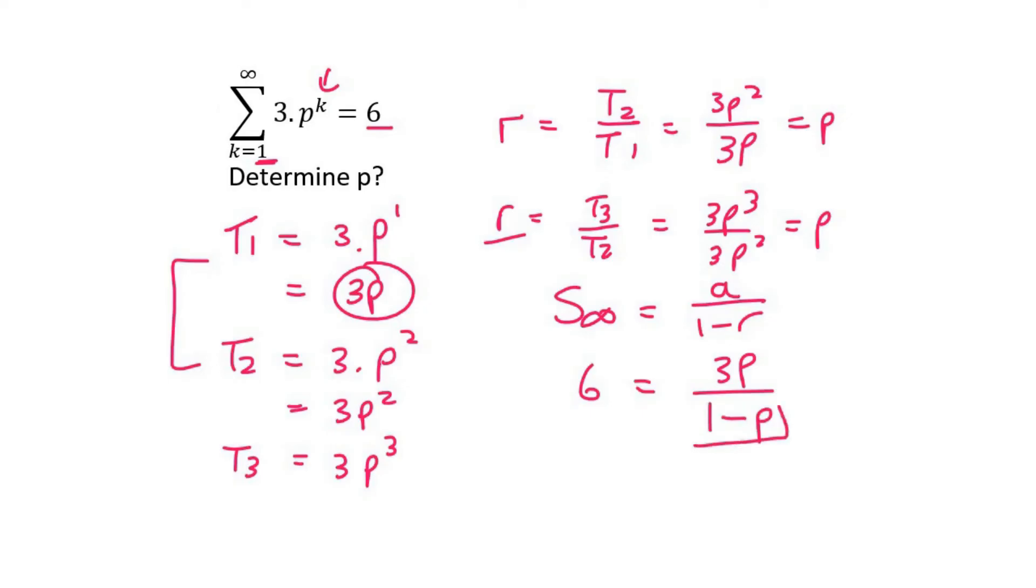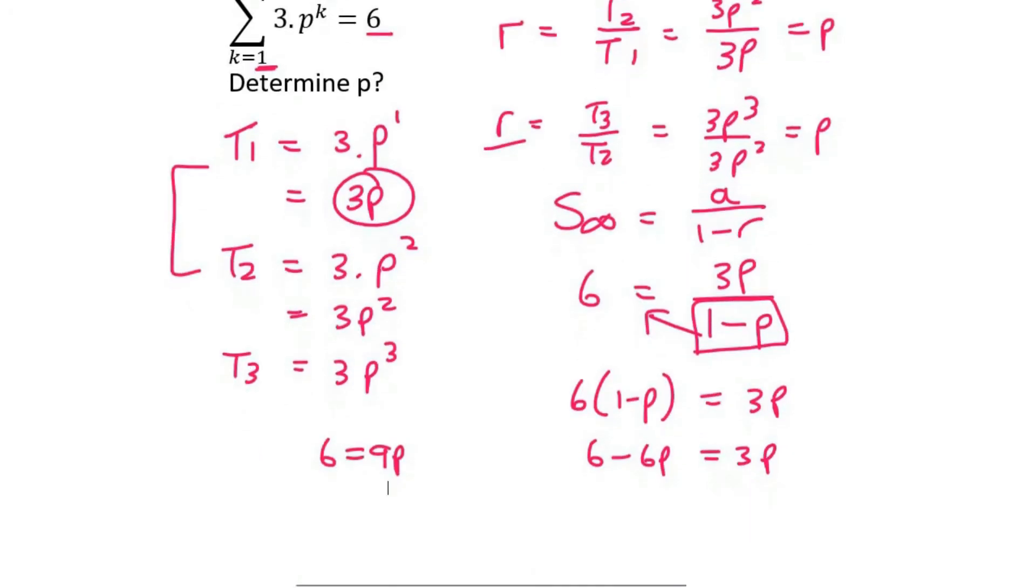Now what I would do is I would multiply this 1 minus p over, so it will become like that. You can then say 6 minus 6p equals 3p. You would eventually end up with 6 equals 9p. And then if you divide, you should eventually get p is 2 thirds.